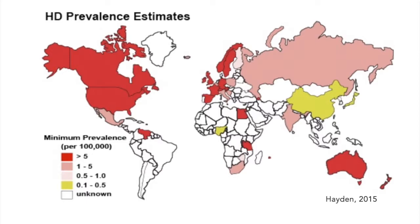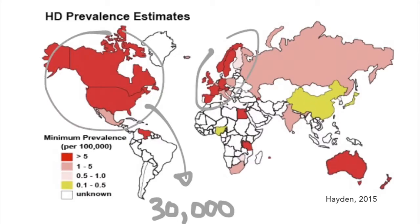Huntington's disease is a neurodegenerative disorder that currently affects over 30,000 Americans. Although found globally, Huntington's disease has the highest incidence in Europe and North America.